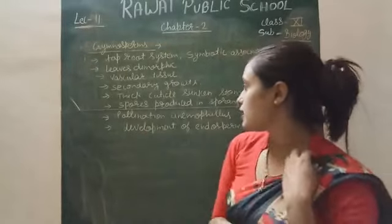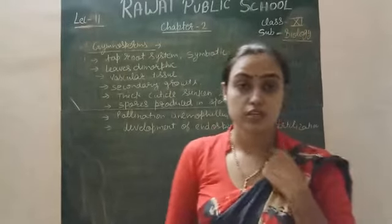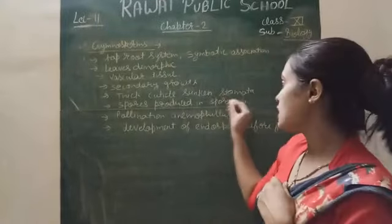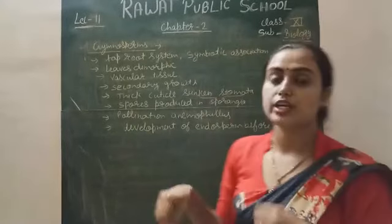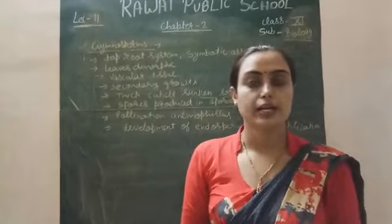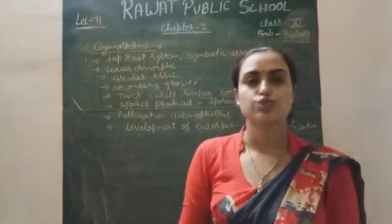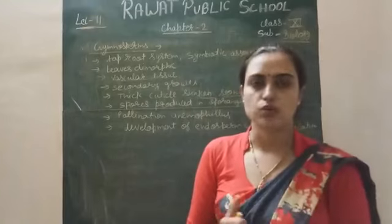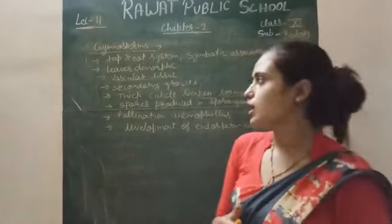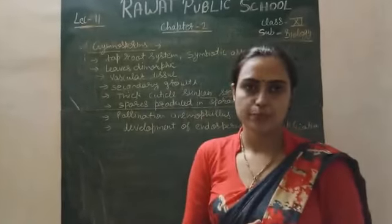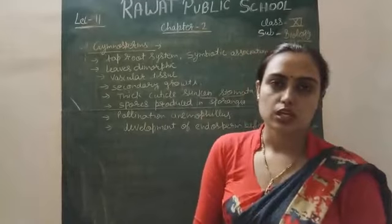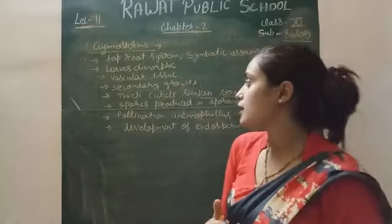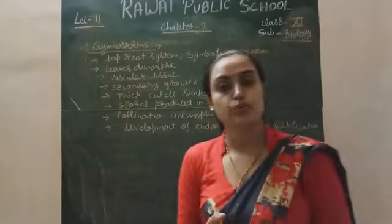One more important feature of gymnosperms is that they have a thick cuticle and sunken stomata. These stomata open during the night time and close during the day time, because some gymnosperms survive in a humid environment. So they have a special type of stomata called sunken stomata. Branch anatomy is also present in gymnosperms.